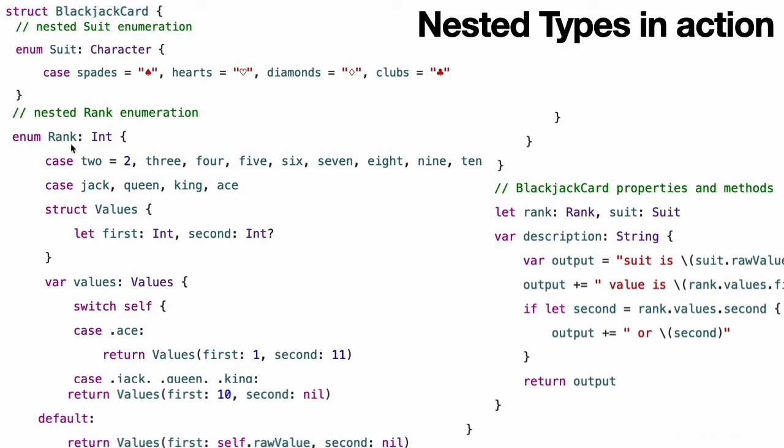The Rank enumeration describes the 13 possible playing card ranks, together with the raw int value to represent their face value. This raw int value is not used for the Jack, Queen, King, and Ace cards.